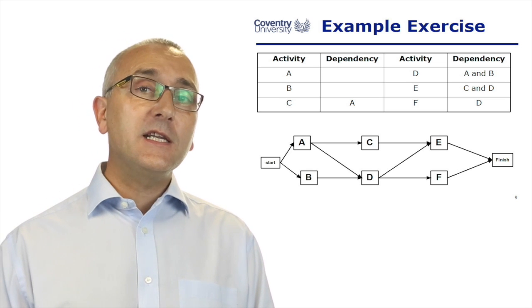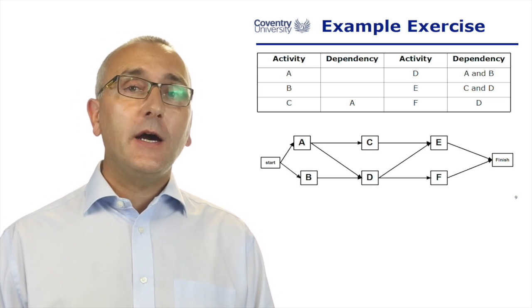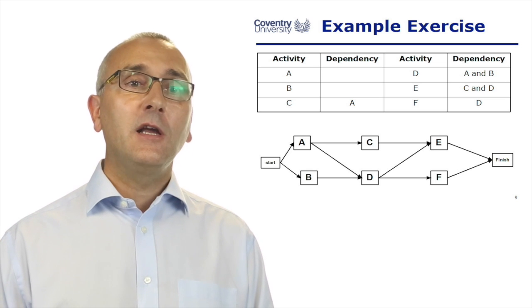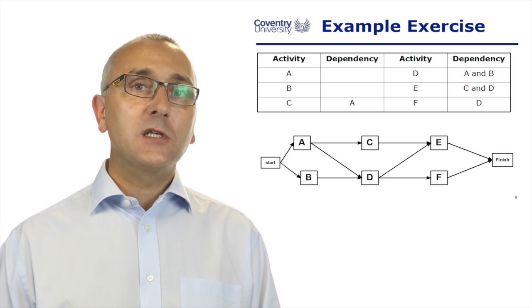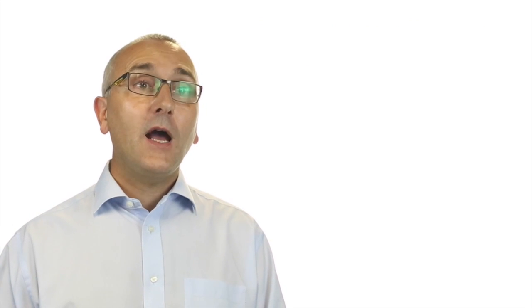If you do this in an assessed coursework situation, I'd expect to see a start task, a finish task. These have to be arrows connecting these. No loops, no dangles. And that's a simple example exercise for a dependency chart. Let's get started.